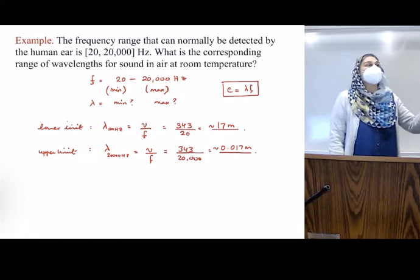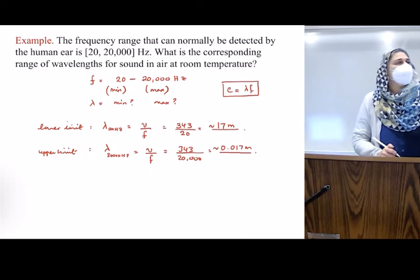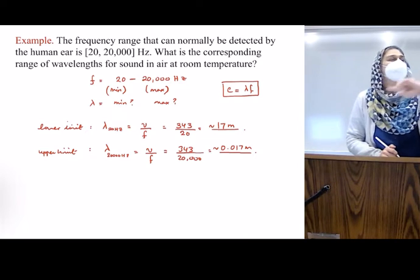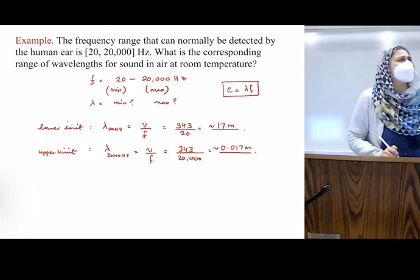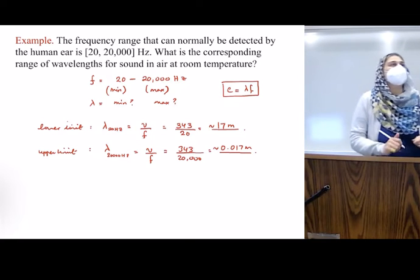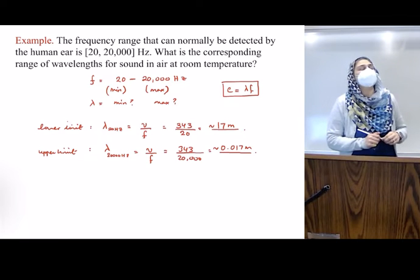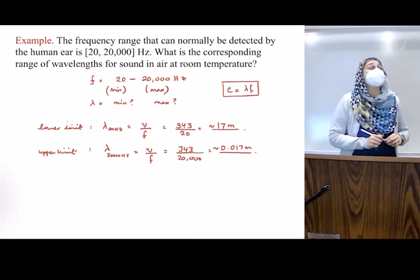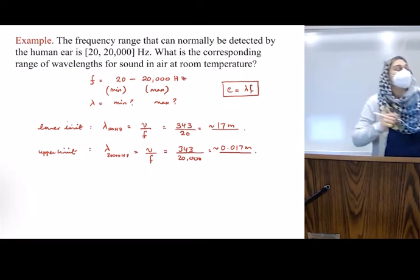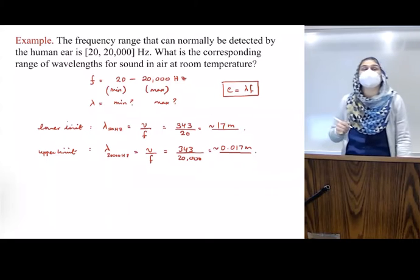That's amazing. So we can hear about yay big, a wavelength coming in about this big. And we can also hear, what would 17 meters even be? So can you multiply that by 3.3 feet? So 17 times 3.3? 56 feet. That's how, if a wavelength of 56 feet was coming towards us, we would still hear it.